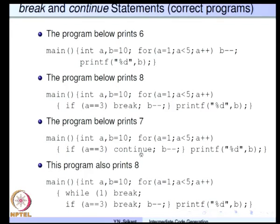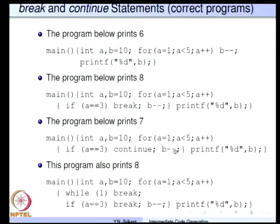Let us introduce a continue statement instead of the break. The program will print 7 — with a equal to 1 the value of b becomes 9, with a equal to 2 it becomes 8, and when a equal to 3 there is a continue, which implies that the control skips the rest of the iteration and goes to the next iteration by incrementing a. So the value of b instead of getting decremented 4 times gets decremented only 3 times, and the value becomes 7.